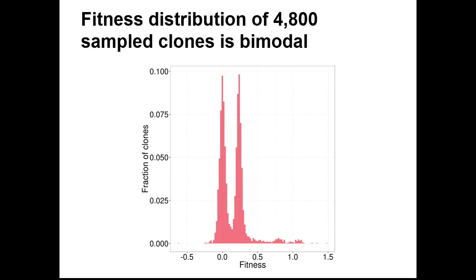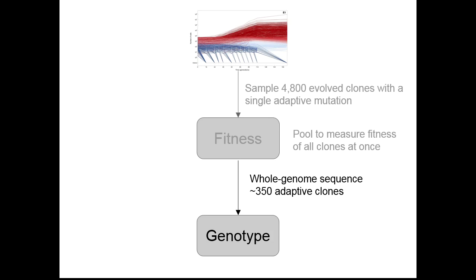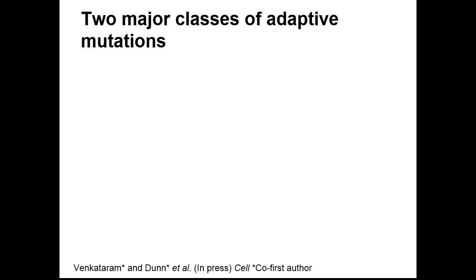Surprisingly, this fitness distribution is bimodal, which is fairly unusual from the exponential models typically used in population genetics theory. We see many clones with zero fitness — essentially neutral — which is expected. But there are also many clones with fitness around 0.25, as well as a long tail of fitness effects between 0.4 and 1.25. We were curious about the genetic basis of adaptation for these different mutation classes. Since we have individual clones corresponding to each fitness estimate, we did whole genome sequencing on 350 of these adaptive clones.